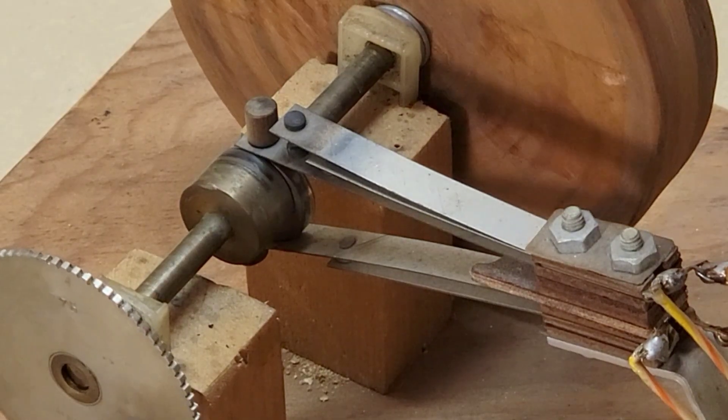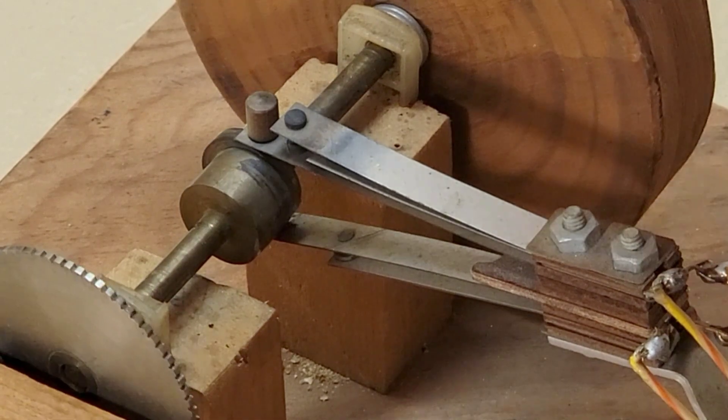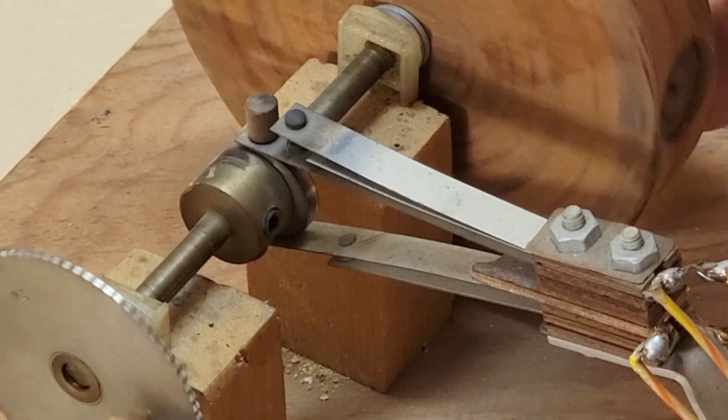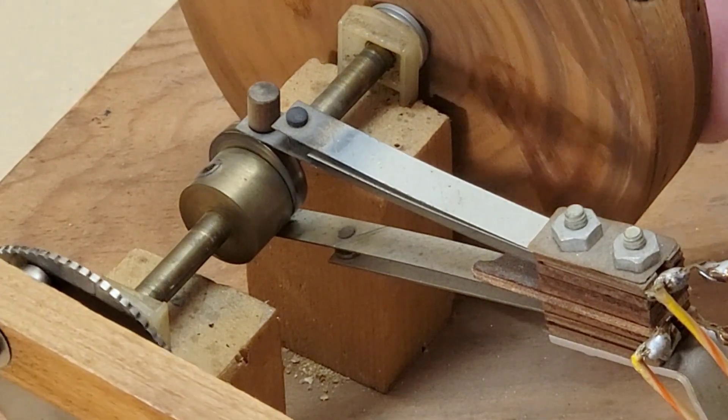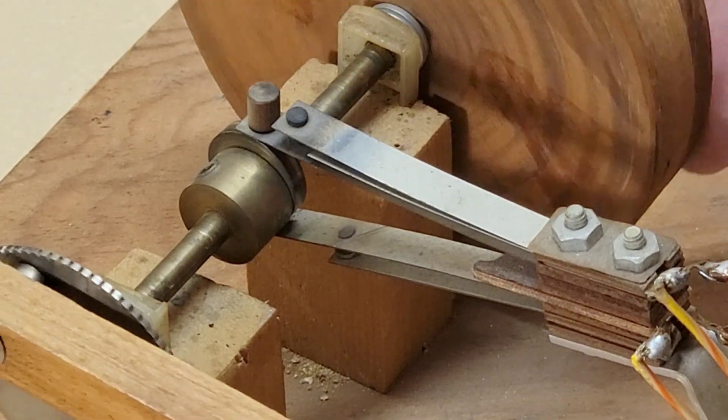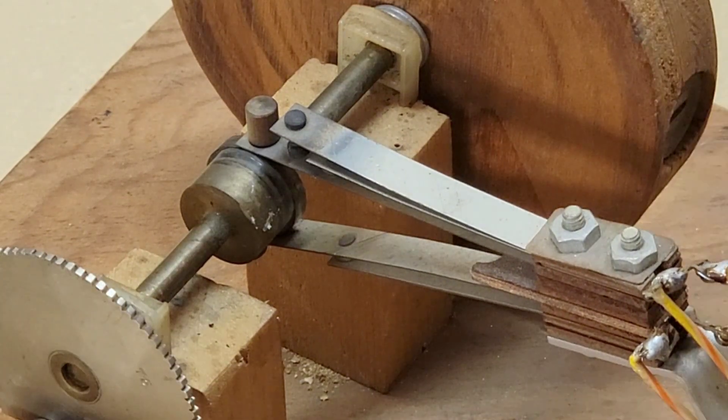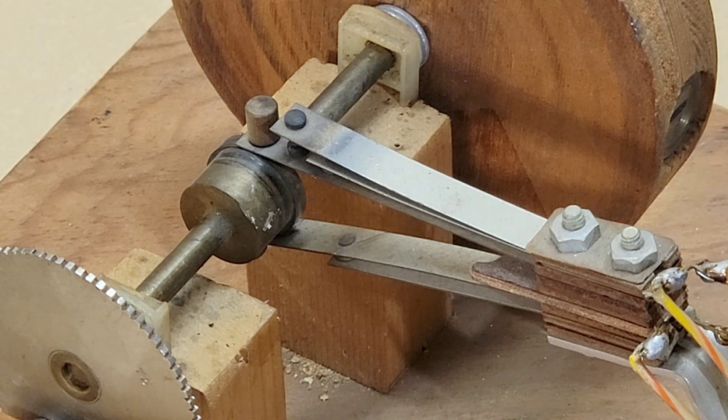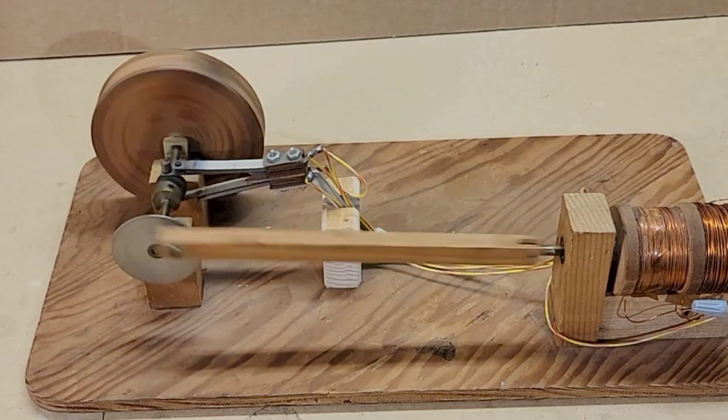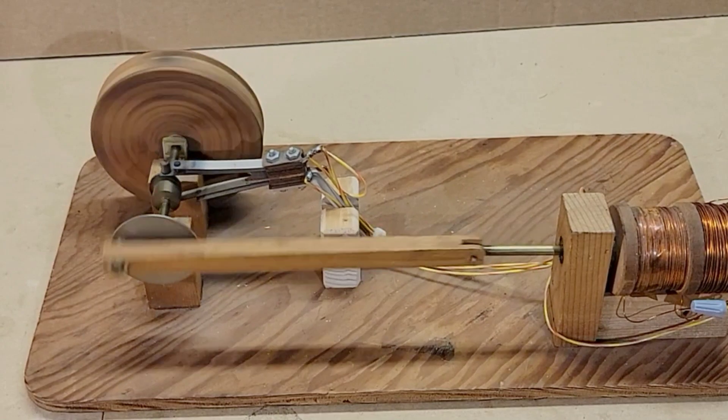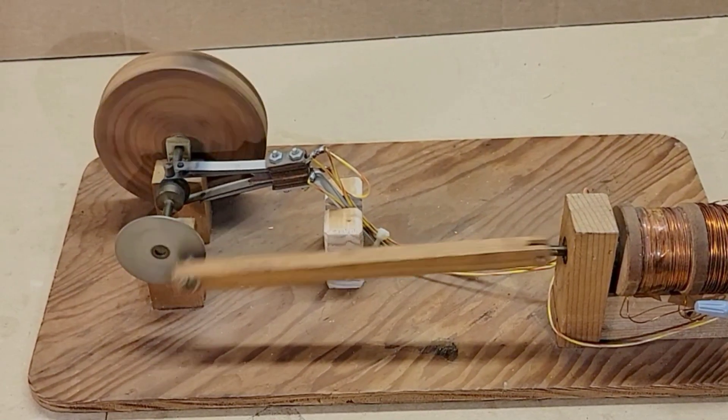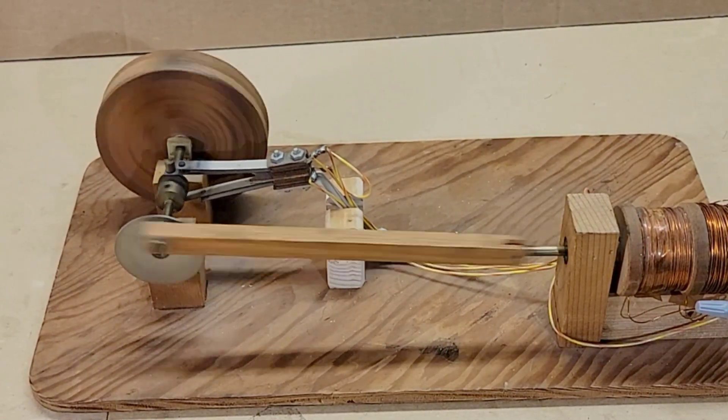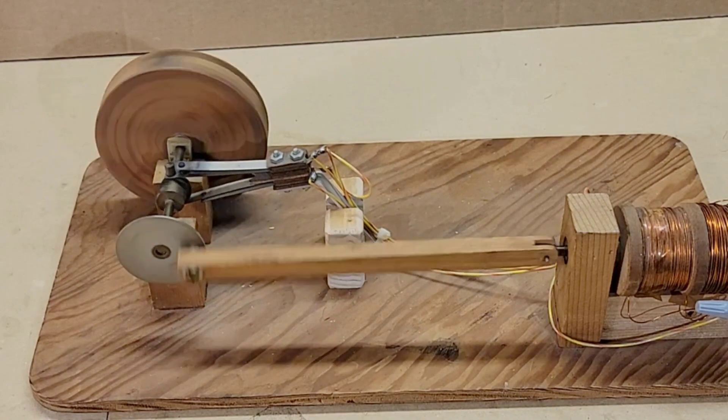When the high point of the cam pushes on the switch arm, the circuit is closed and one coil is energized, attracting the iron piston. When the crankshaft rotates 180 degrees the other coil is energized and pulls the piston in the opposite direction. The motor runs on 12 volts DC and runs very smoothly.